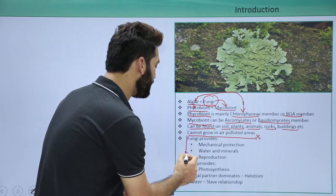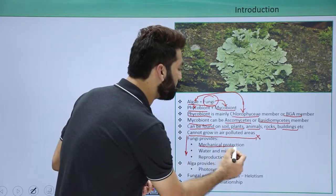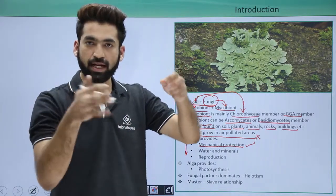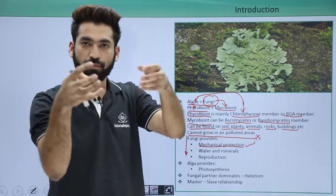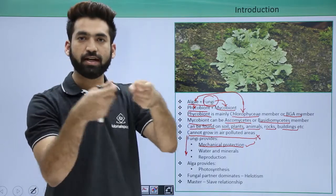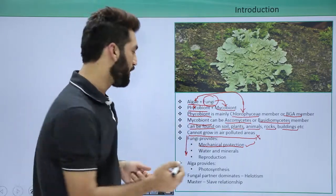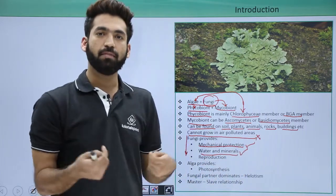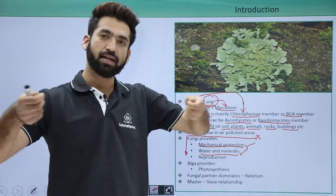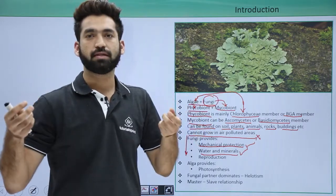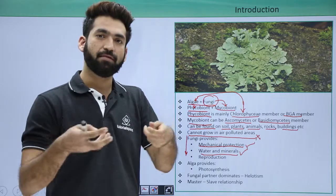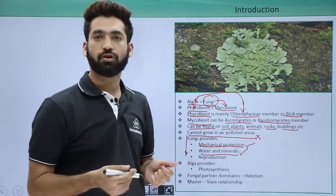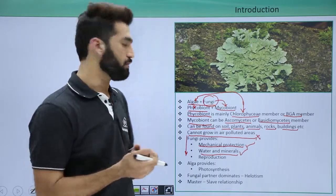Now what is fungus providing? So fungus is providing the mechanical protection to the algae partner. The algae partner is getting inside so that the fungus is giving the shelter to that particular algae partner. Fungus is also giving water and minerals to the algae. The algae will be doing photosynthesis for that fungus is absorbing water and minerals from different parts or maybe like from the soil. And it is giving to the algae partner and algae partner is performing the photosynthesis.